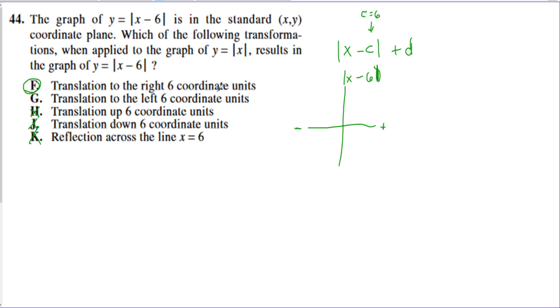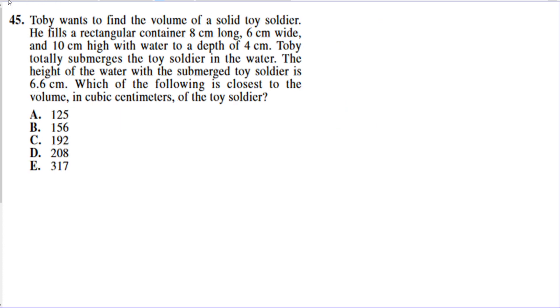When you see a minus sign, the graph goes in the positive direction — to the right. When you see a plus sign, it goes in the negative direction — to the left. Left and right transformations are opposite of what you'd think. Something to be careful about for transformations.